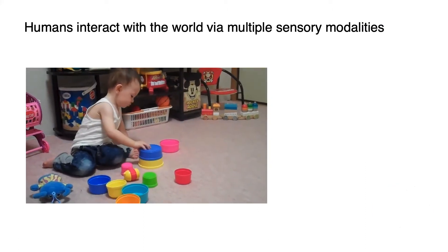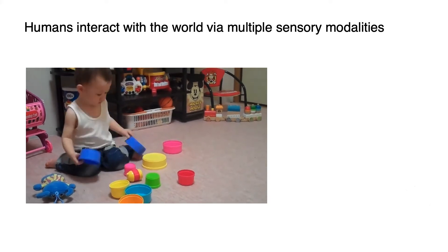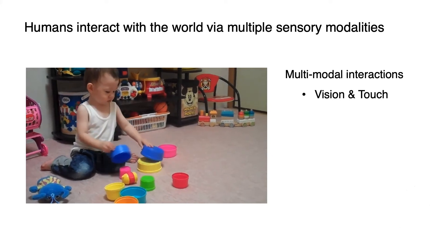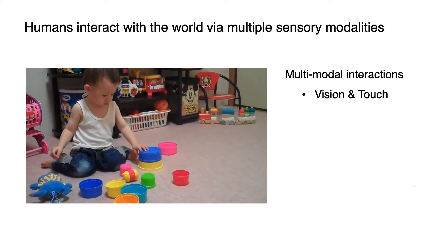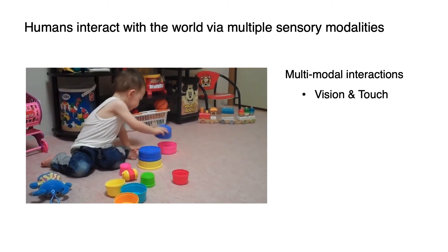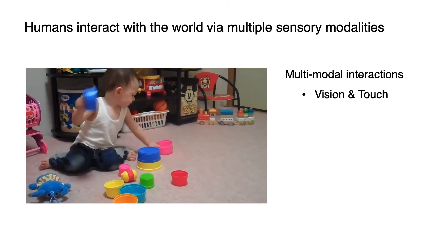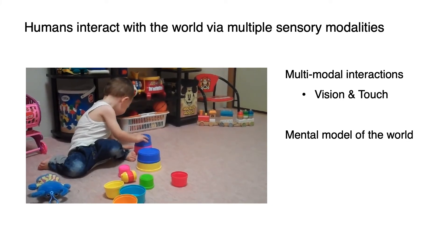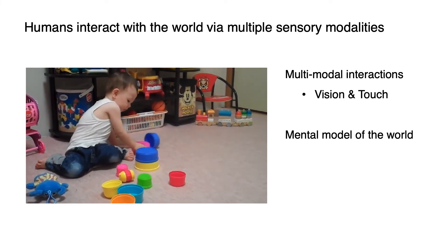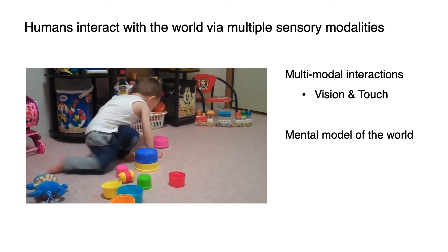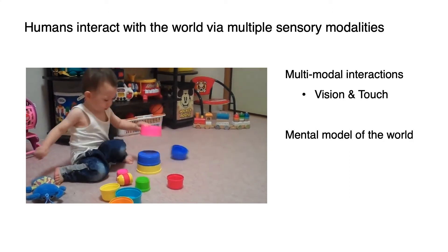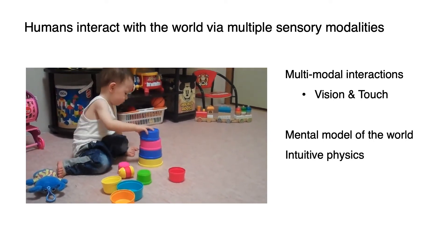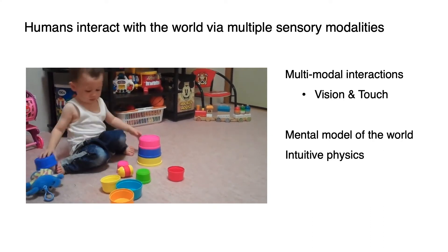Humans interact with the world via multiple sensory modalities, in which vision and touch play an important role when manipulating the objects around us. During multi-modal interactions with the surrounding environment, which starts from a very young age, humans develop a mental model of the environment and predict how it's expected to change when we apply a specific action. This ability is also commonly referred to as intuitive physics, which is tremendously helpful for accomplishing daily manipulation tasks.